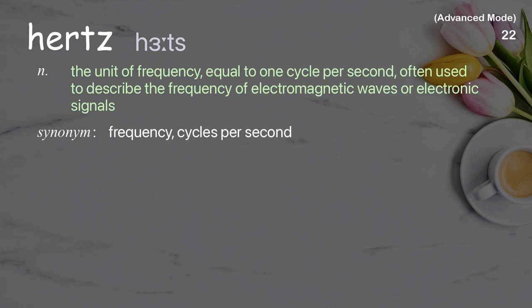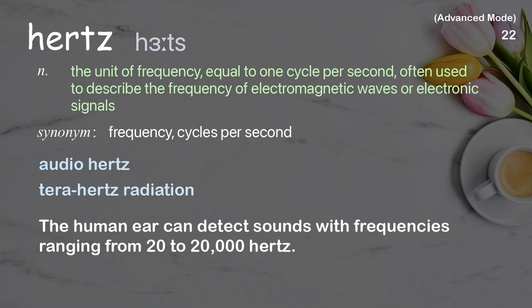Hertz. The unit of frequency, equal to one cycle per second, often used to describe the frequency of electromagnetic waves or electronic signals. Examples: audio hertz, terahertz radiation. The human ear can detect sounds with frequencies ranging from 20 to 20,000 hertz.